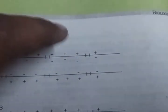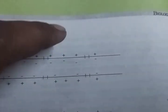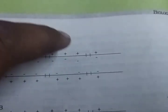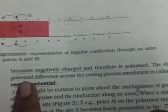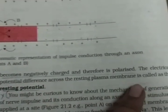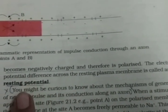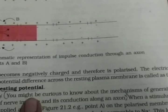The electrical potential difference is called resting membrane potential or resting potential. The electrical potential difference across the resting plasma membrane is called resting potential or resting membrane potential.